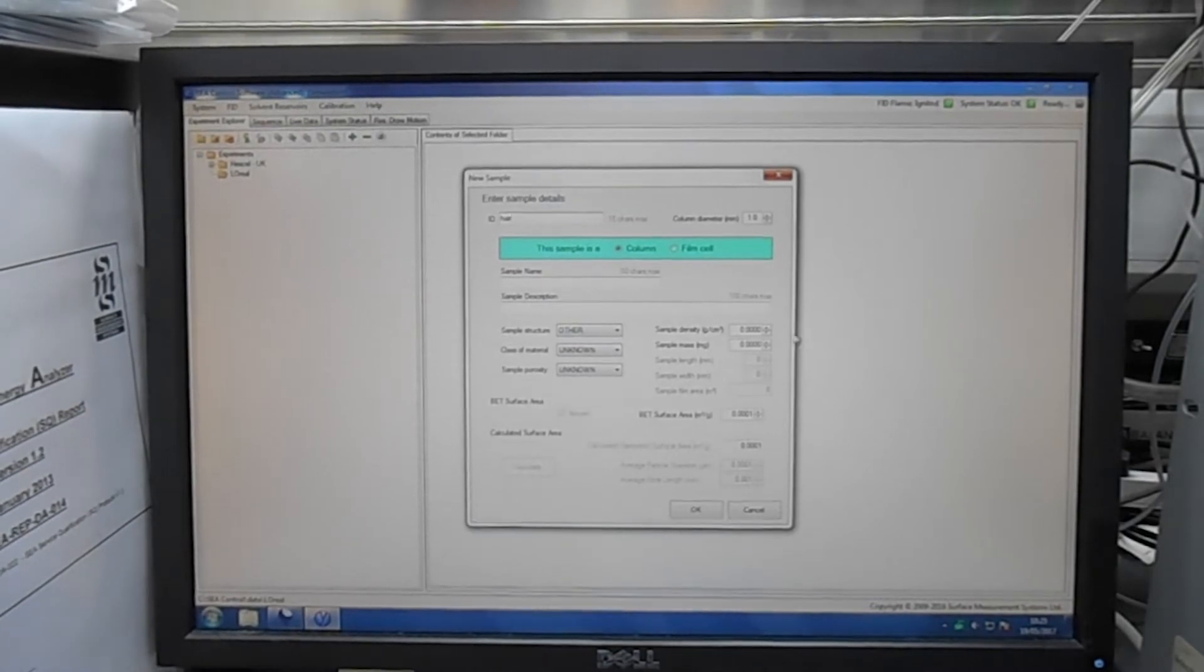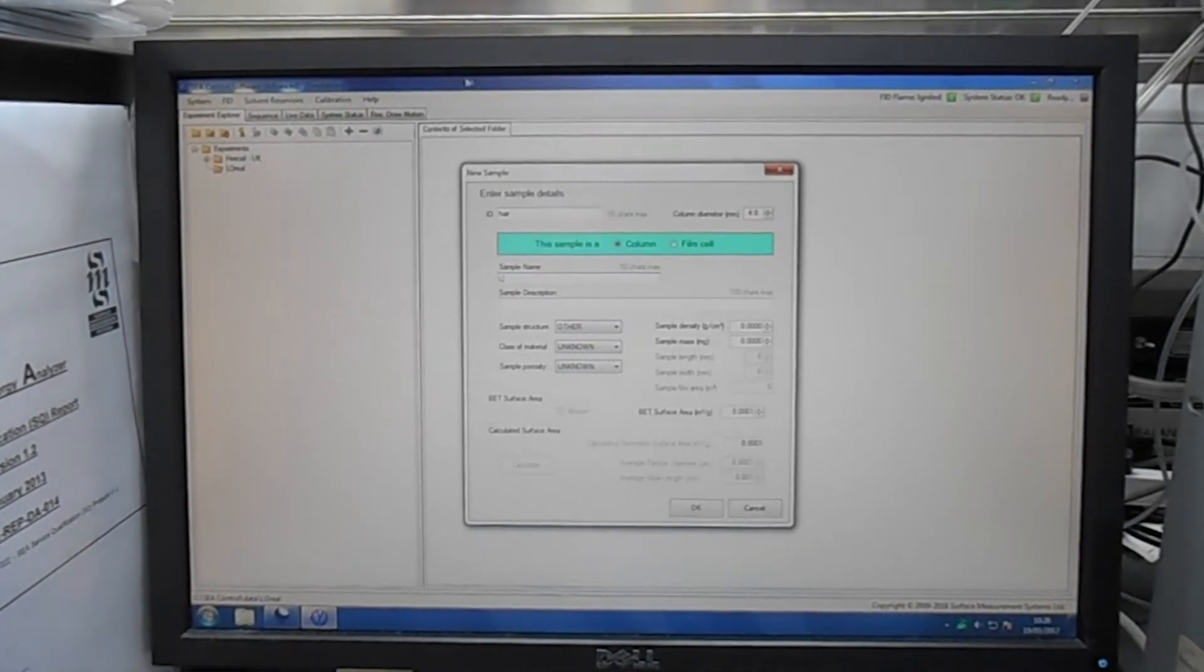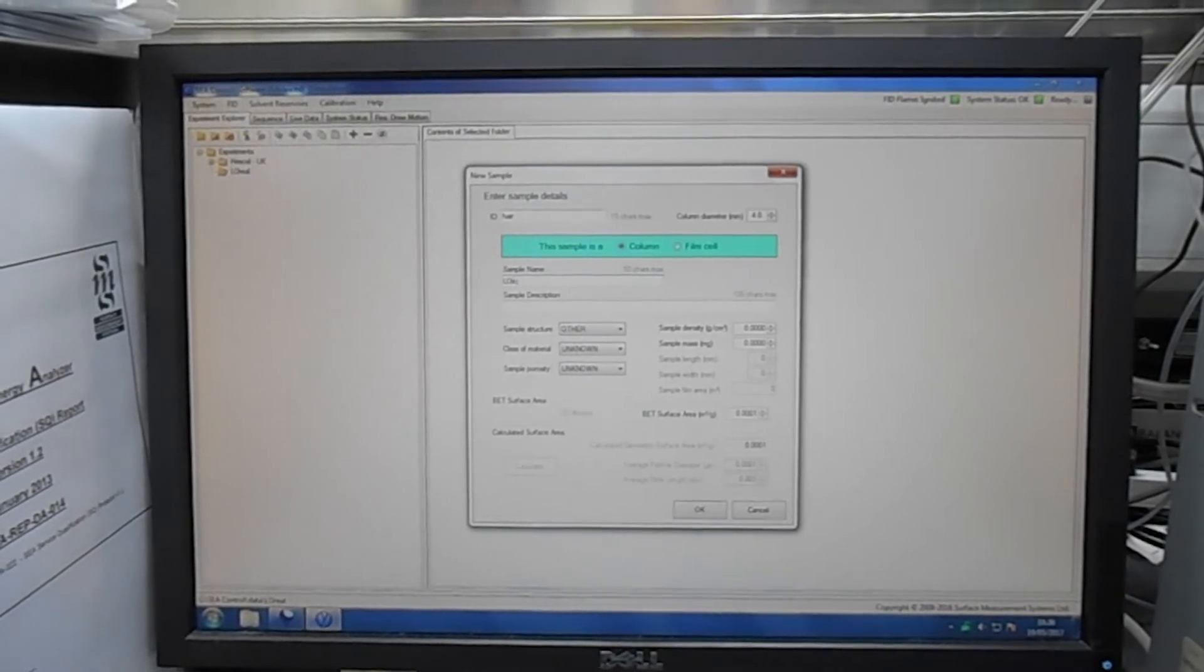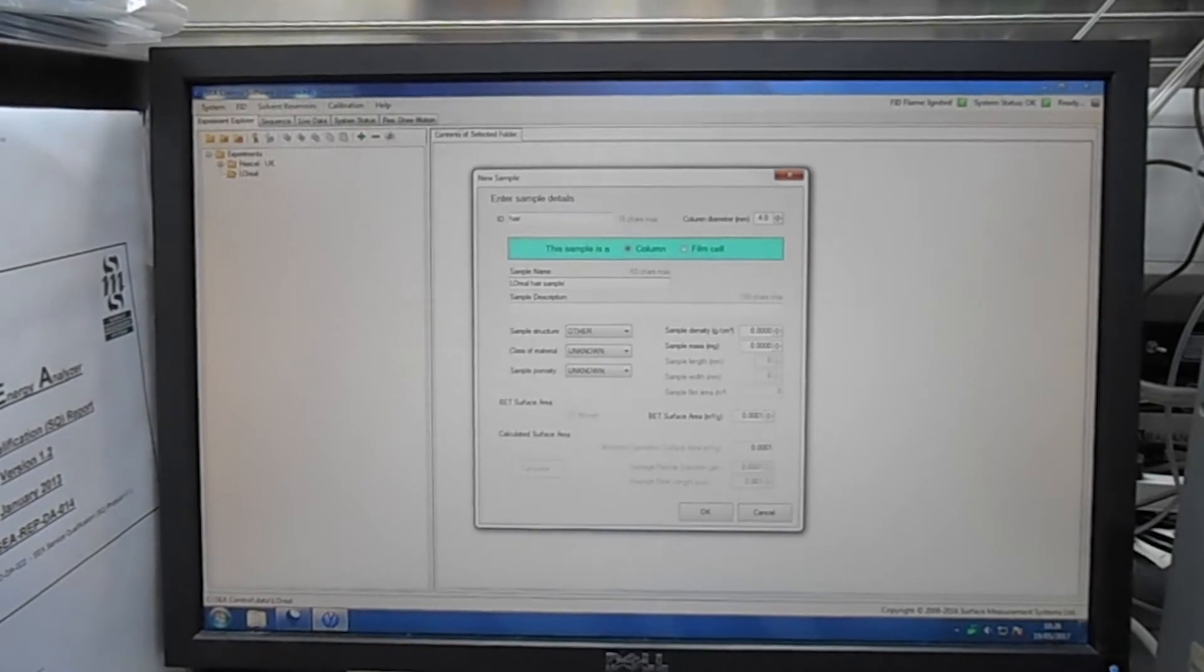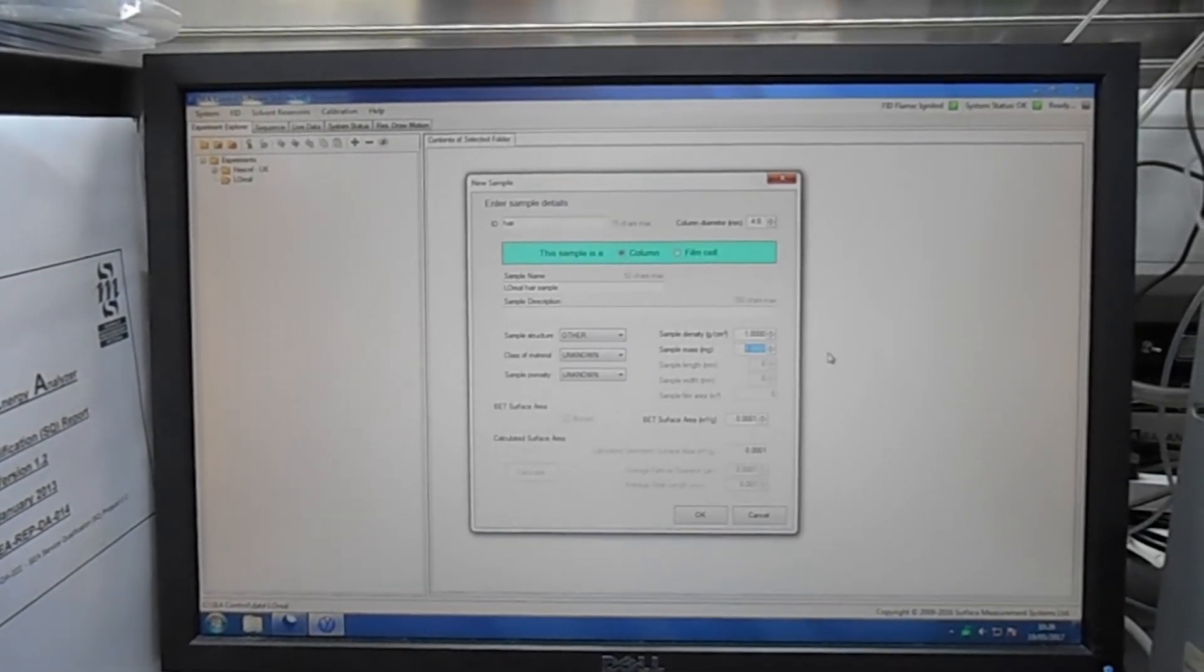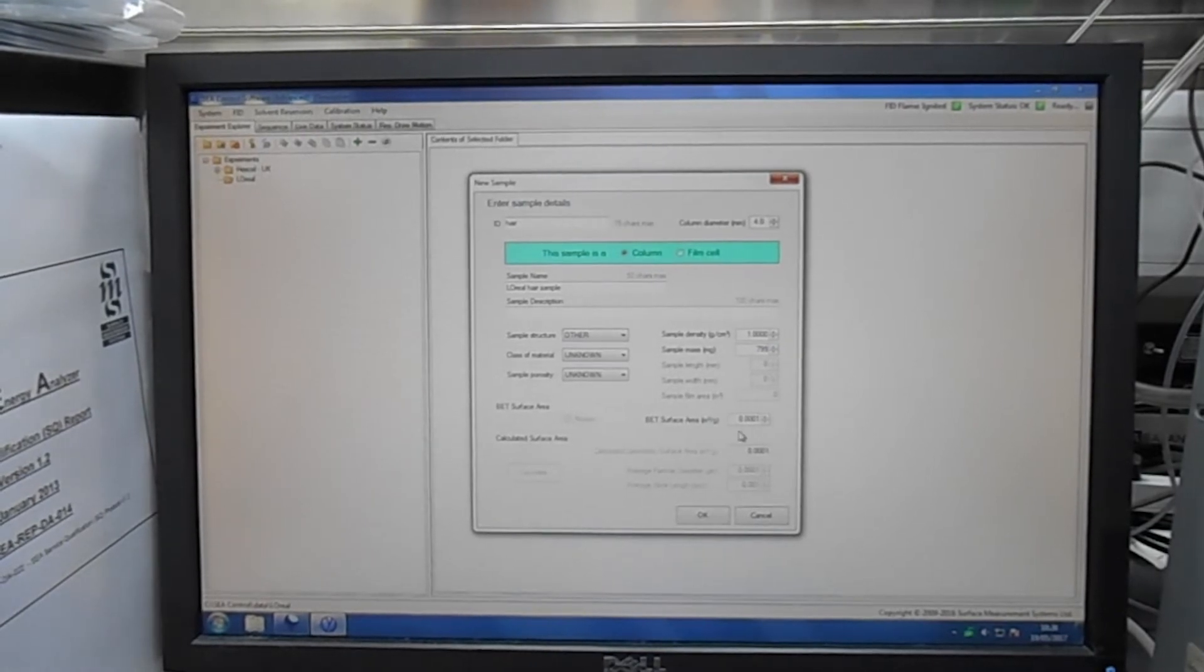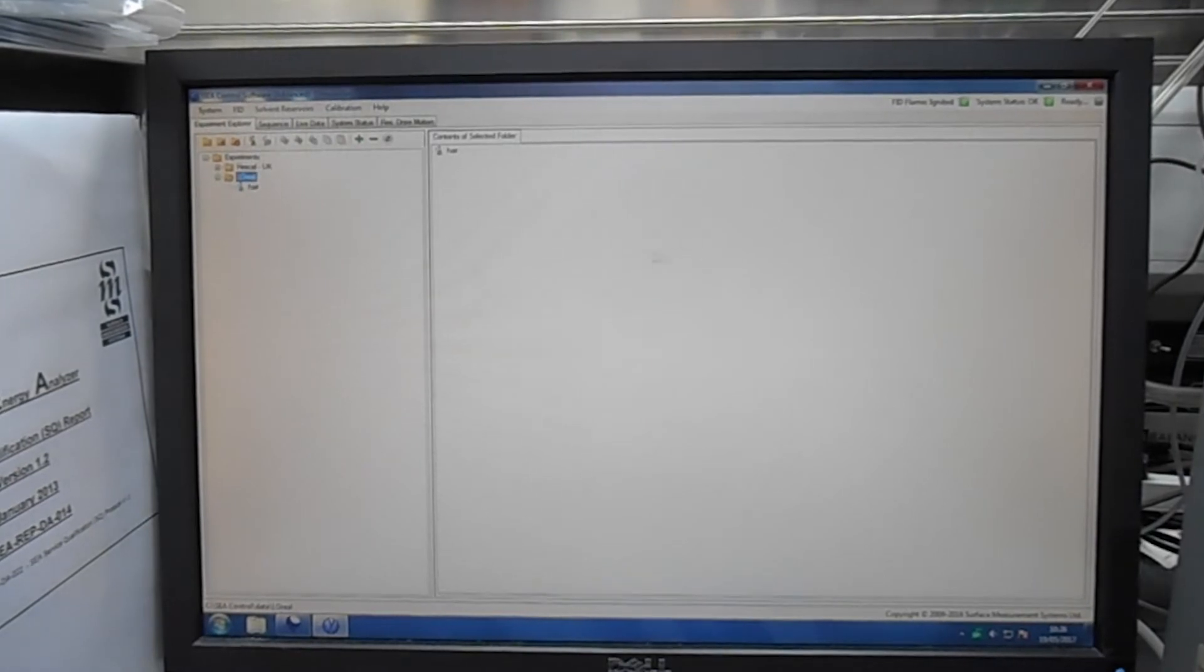Some of the information are required only for specific types of analysis. For example, sample density is only required for solubility parameter, while BET surface area is always required even as an estimate for any type of measurement. The estimated surface area for hair sample is usually around one square meter per gram.